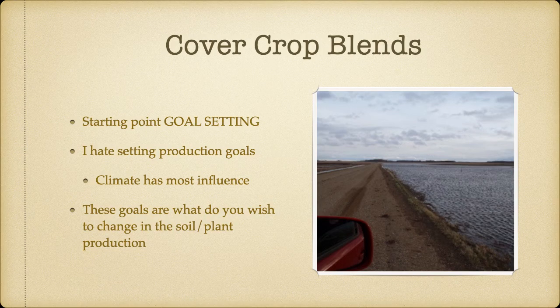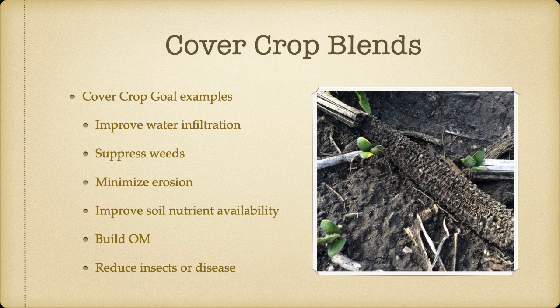Where we need to start is we have to set goals. As a producer I hate setting production goals because the climate is going to influence what our end-up yields are going to be. What we need in this case is setting goals of what we want to change in our soil or plant production. Some examples are: we want to improve our water infiltration, suppress weeds, minimize erosion, improve soil nutrient availability, build organic matter, or reduce insects or diseases in our crops.